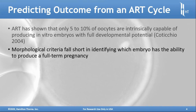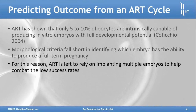Morphological criteria are basically all that have been available to try and identify which embryo has the ability to produce a full-term pregnancy. We've moved towards embryo biopsy, and with the ability to cryopreserve embryos and get a genetic analysis, we do have tools beyond strict morphology. For this reason, assisted reproduction technology is left to rely on implanting multiple embryos, especially for more difficult patient scenarios.